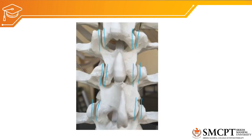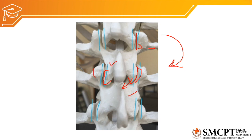For rotation, since the facet orientation is nearly 90 degrees to the horizontal plane and faces sagittally, there will be less rotation — only about 0 to 3 to 18 degrees. When rotating to the right, on the same side the inferior articulating facet slides posteriorly on the superior articulating facet of the inferior vertebra, and on the opposite side it slides slightly anteriorly. This combination of facet sliding from L1 to L5 creates approximately 0 to 3–18 degrees of rotation at the lumbar column.